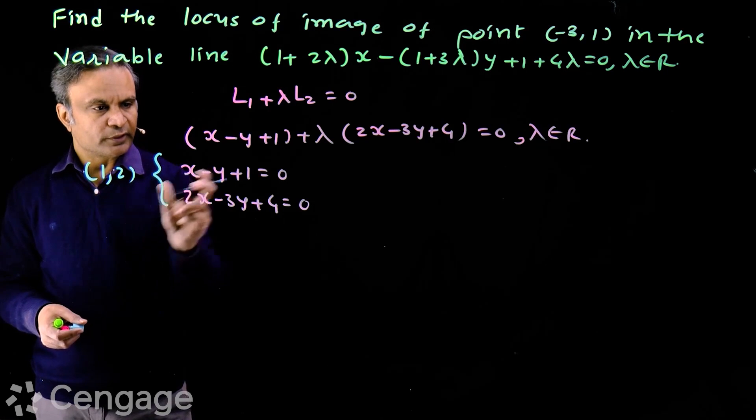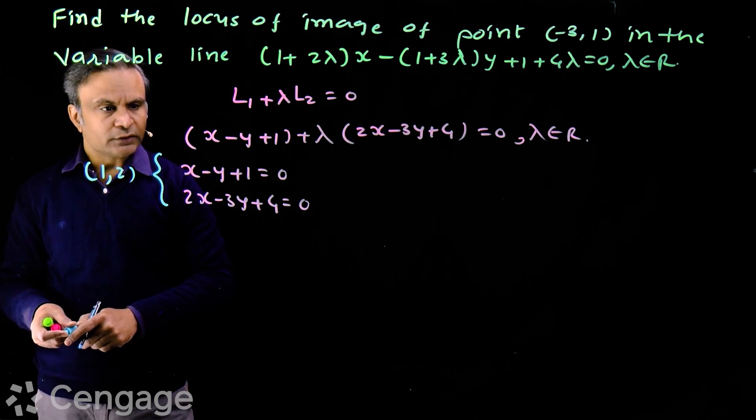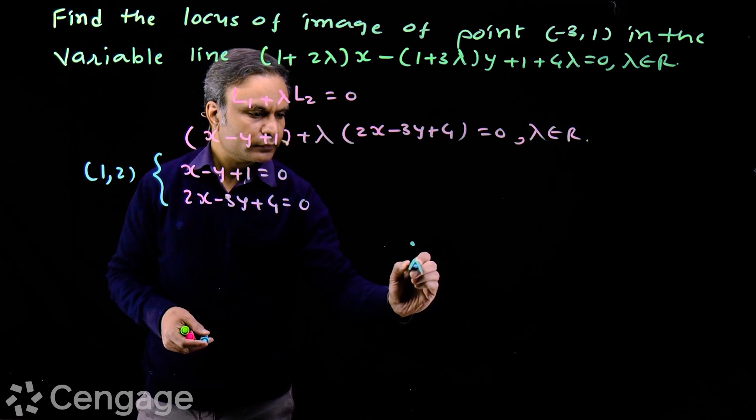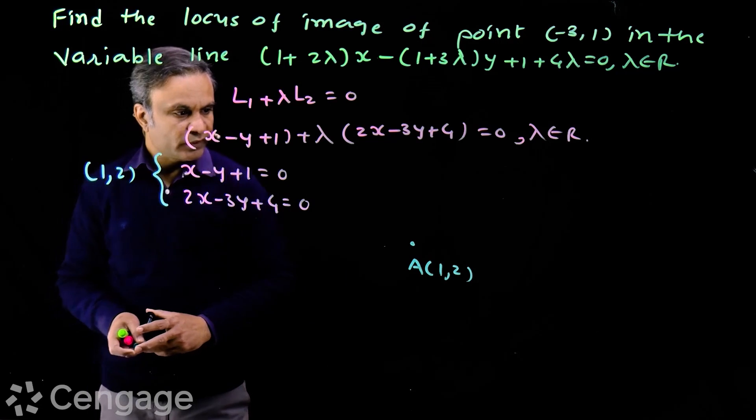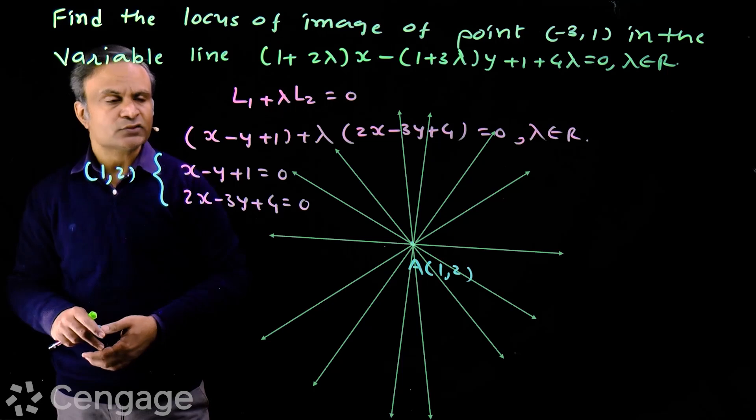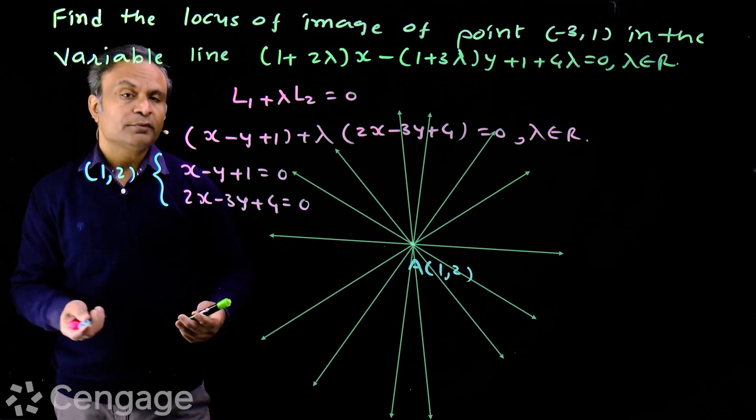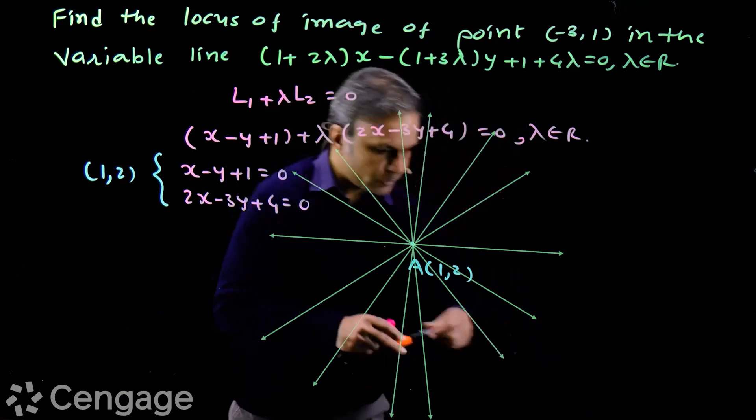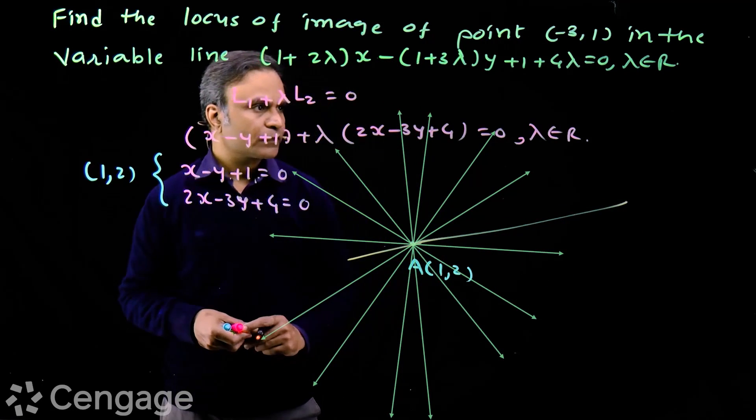Check (1, 2) in both straight lines - they satisfy. Point of intersection is (1, 2). So we put here point having coordinates (1, 2), suppose this is point A. We have infinite lines passing through point A. We have family of straight lines concurrent at point A. Let's consider one of the members of this family. Let's draw this line.